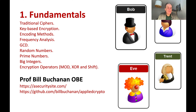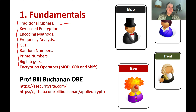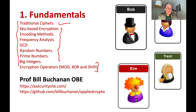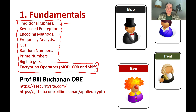In the first unit, we'll look at fundamentals around traditional ciphers — still important, as they give you a way to train your mind in how to crack ciphers. Then we'll look at key-based encryption, some encoding methods, random numbers, big integers, and the operators we use for encryption. This provides the basic foundation for the module and covers some of the key principles involved.